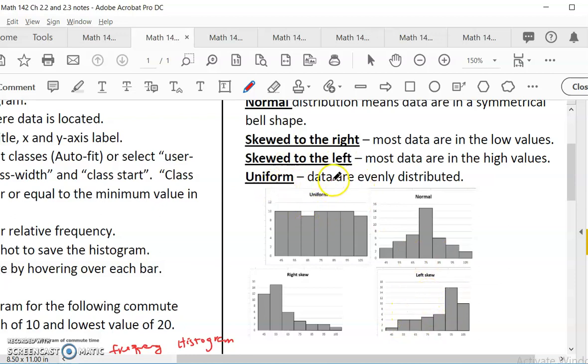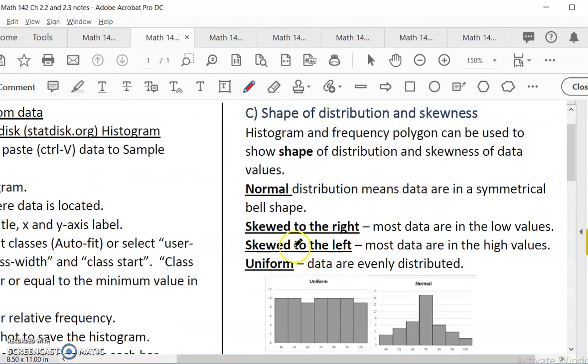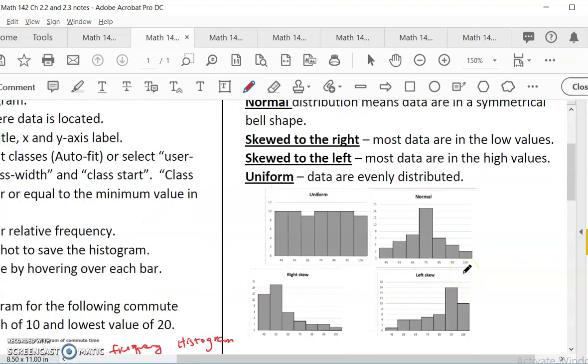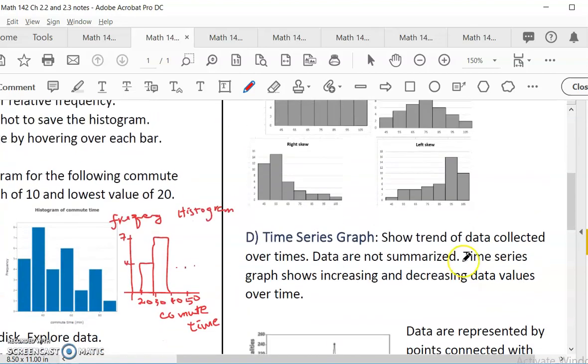Uniform is when data does not cluster around any number. It is evenly distributed. You have equal frequency of one, two, three, all these classes. Know these terms. And of course, if a data is normally distributed, we have a lot of mathematical tools to analyze those data. When you are going to more advanced statistics, you will learn skills to analyze skewed data also.